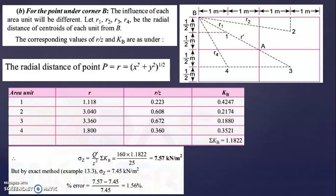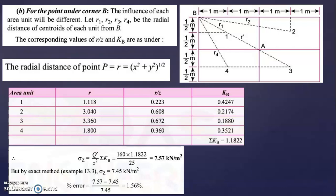Now find the percentage error in using the rectangular method. Previously σz = 7.45; here it is 7.57. Percentage error = (7.57 − 7.45) ÷ 7.45 = 1.56% — a very small error. So far two methods have been explained: rectangular loading method and equivalent point load method. We will solve another example in the next class.